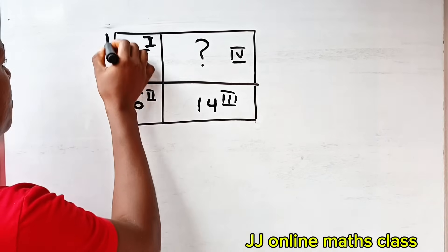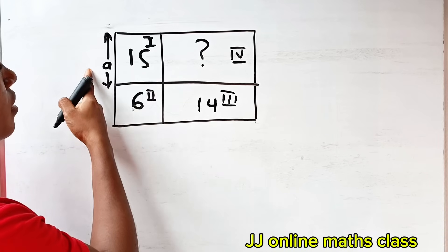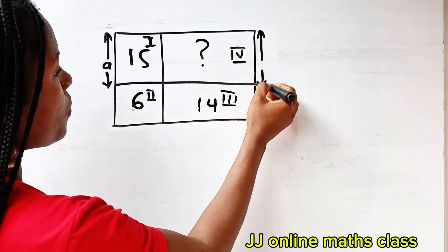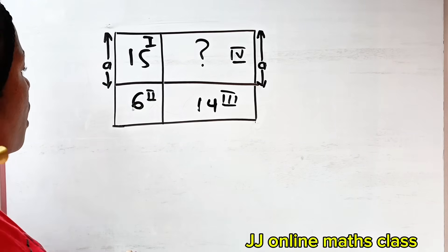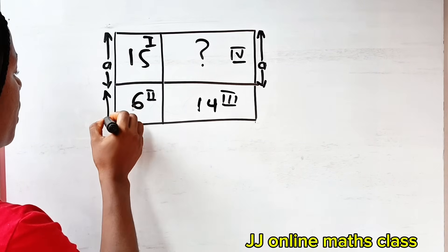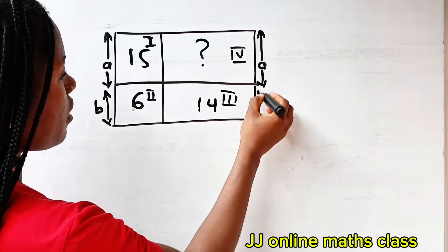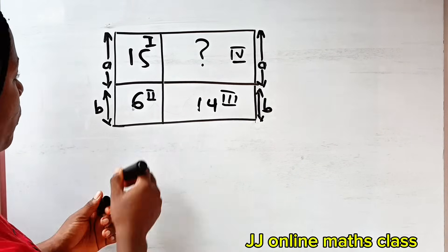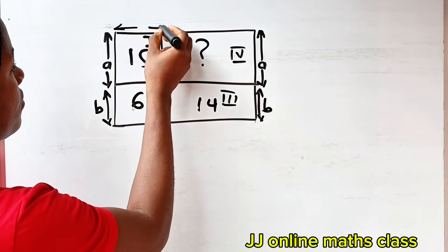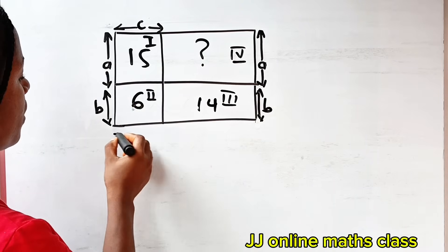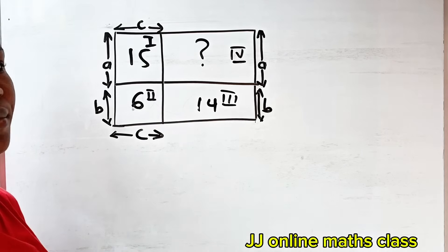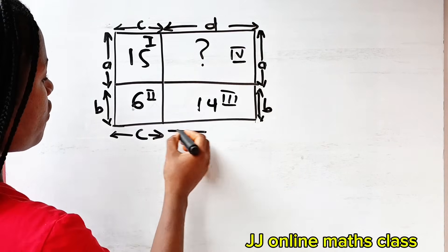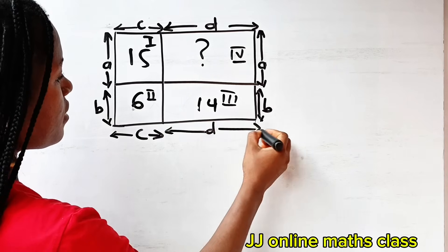If we let this side length be equal to A, then the opposite parallel side will also be equal to A. If we let this side be B, then the opposite side is also B. Similarly, if we call this side C, the corresponding side is also C, and if we call this side D, the corresponding side is also D.